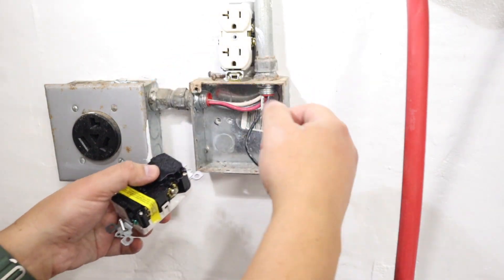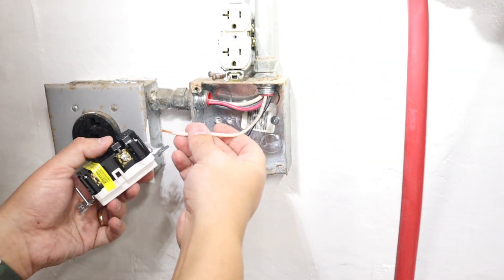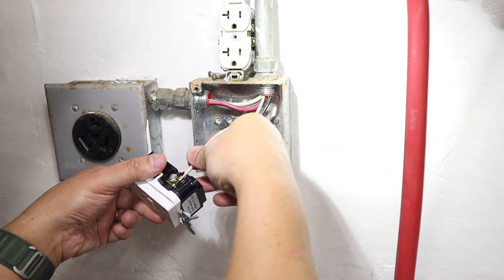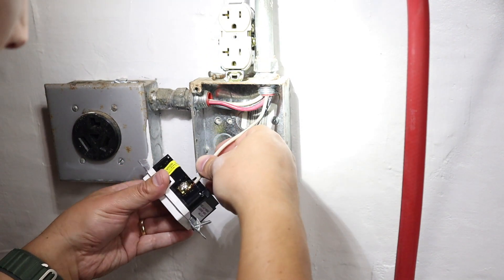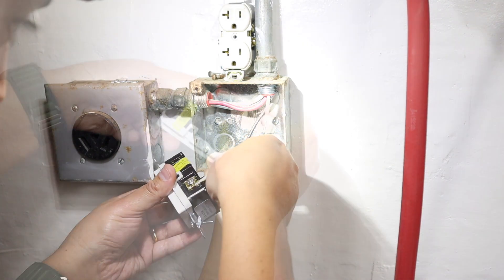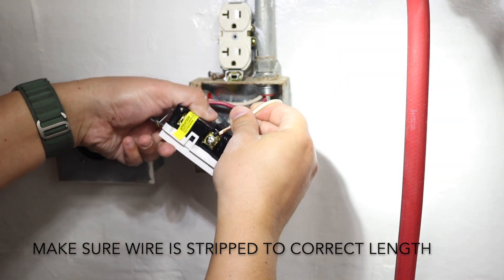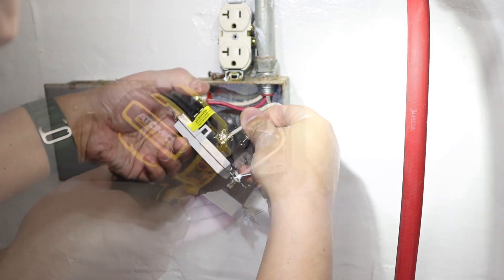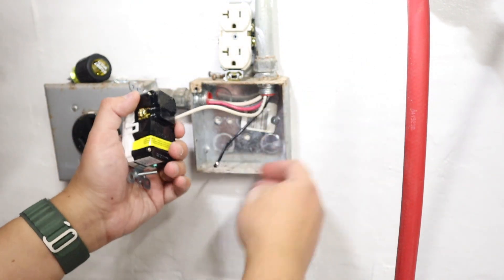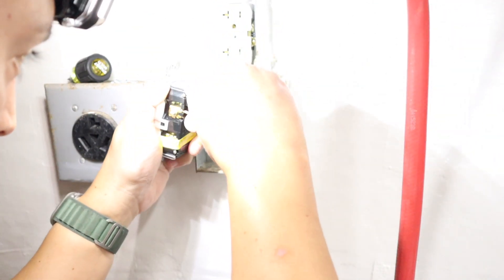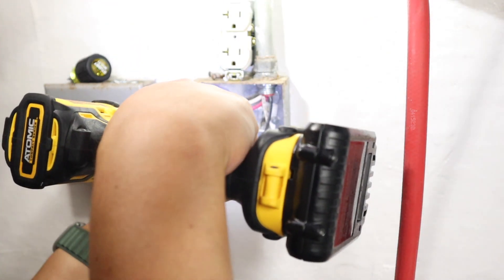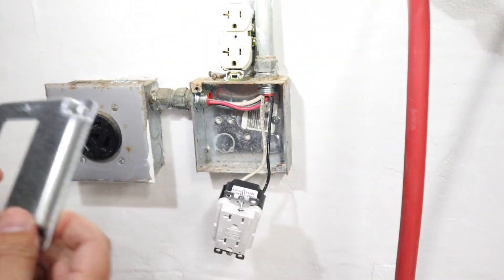We're going to take our white wire and drop it in behind this little plate. Now we're going to do the black wire. I'm just going to push it in behind this plate here and put this one on there.